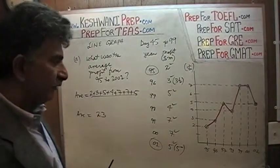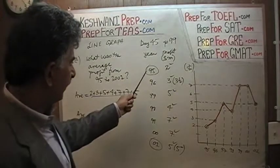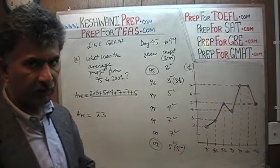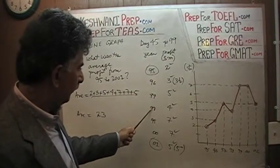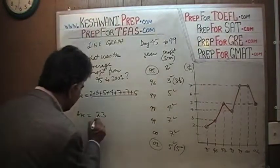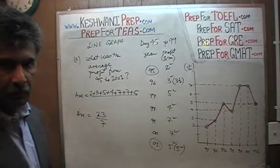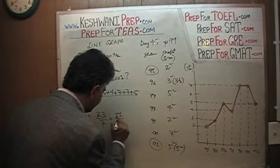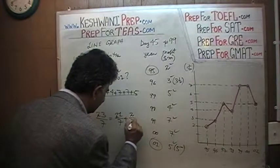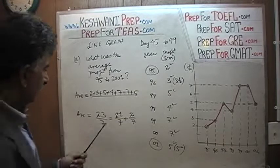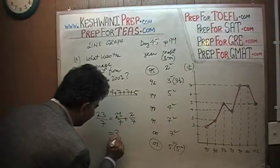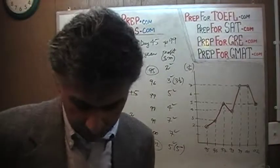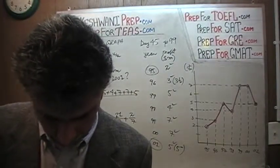Now we have to divide it by the number of observations. How many years do we have? Let's count them: 1, 2, 3, 4, 5, 6, 7. Always count them — don't just subtract one from the other, you're going to get it wrong. So 33 divided by 7. That is the same as 21 divided by 7 plus 2 divided by 7. 21 divided by 7 is 3, so it's 3 and 2 sevenths. That's your profit — 3 and 2 sevenths of a million dollars.